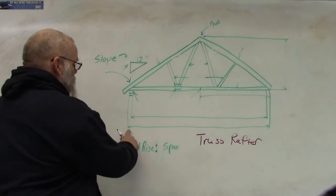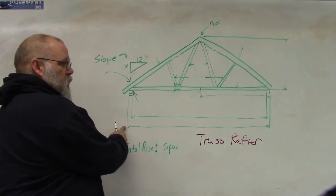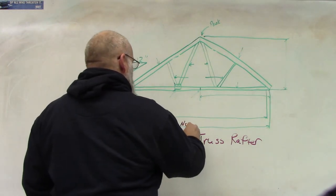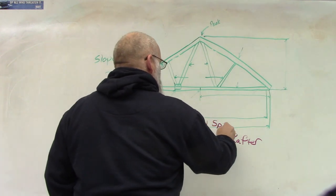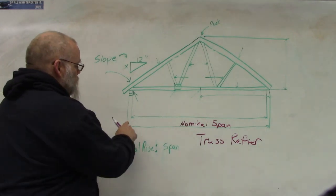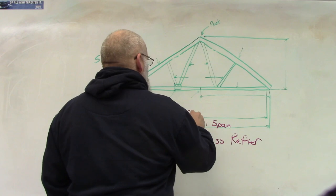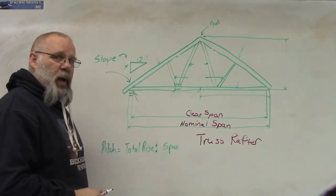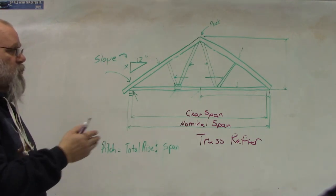First, here at the bottom, we have the distance from the outside of the wall on this side to the outside of the wall on that side — that is called the nominal span. The distance from the inside of the wall to the inside of the wall is called the clear span. So we have the nominal from outside to outside, and clear from inside to inside.